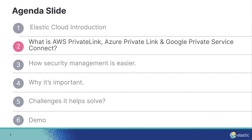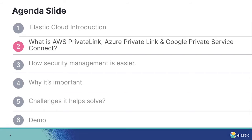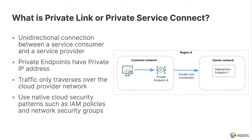PrivateLink is important to understand — it's a newer concept that came about in the last two to three years. Google Private Service Connect is even more recent; it was just launched and GA'd a few months ago. PrivateLink is a secure way of connecting from a consumer network to a provider network. In this case, the consumer network is your Elasticsearch client that might be running in your own VPC or VNet.